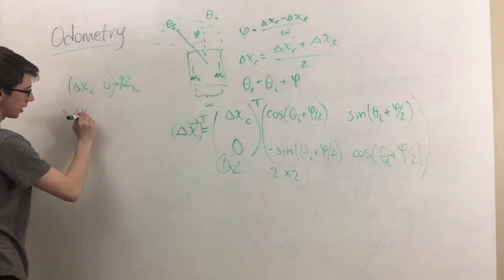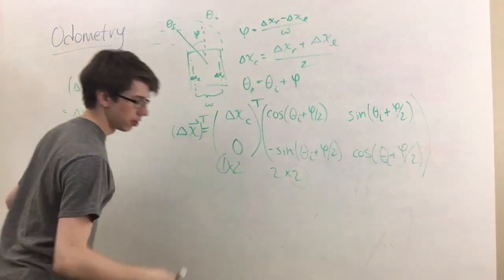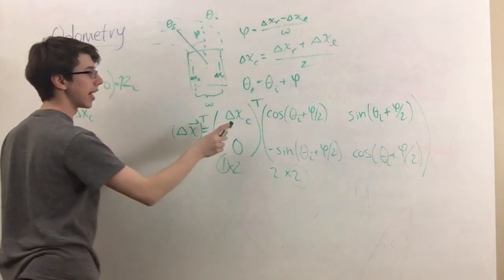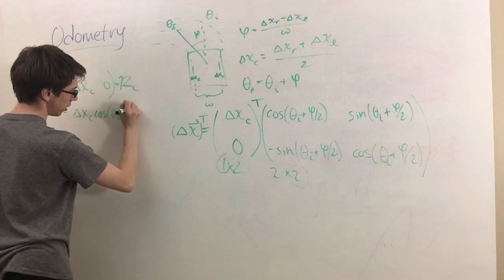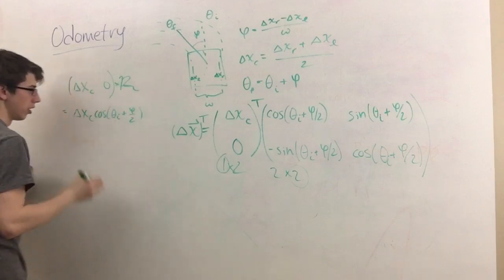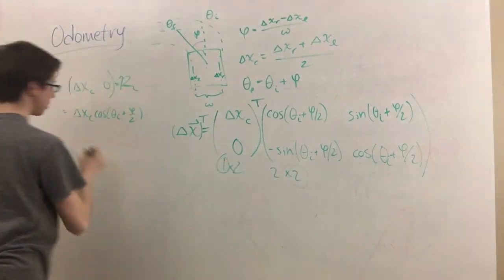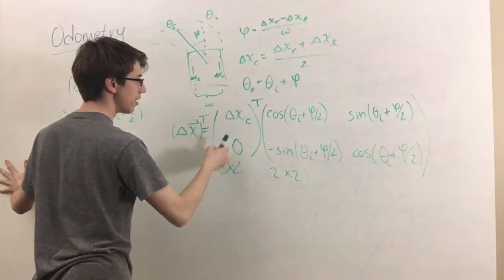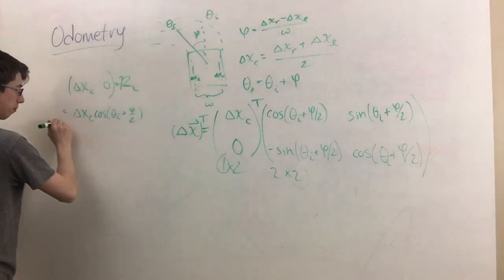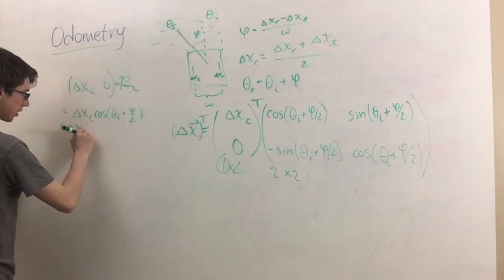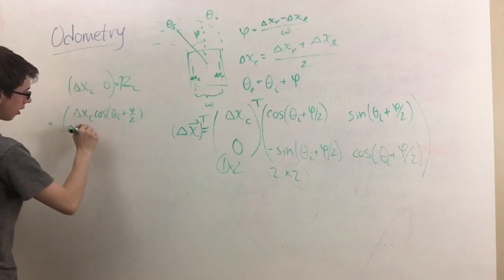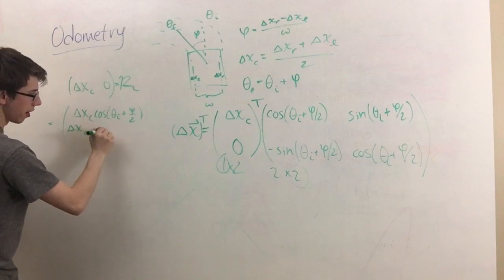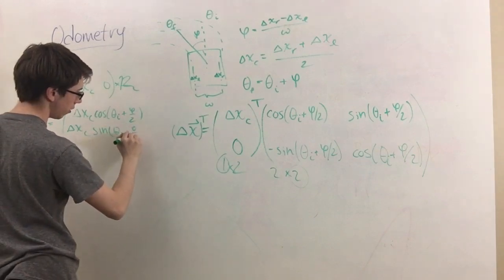So this would actually give you delta x c times cosine theta initial plus phi over 2, and then plus 0 times this, so that's just 0. And then we go back up here times that, so we get plus delta x c. That's not plus my man, this is a vector. Sine of theta initial plus phi over 2.